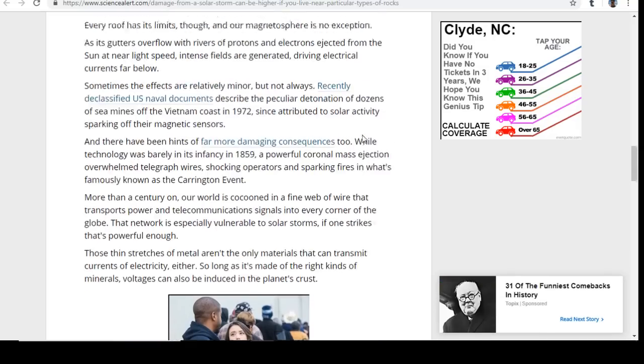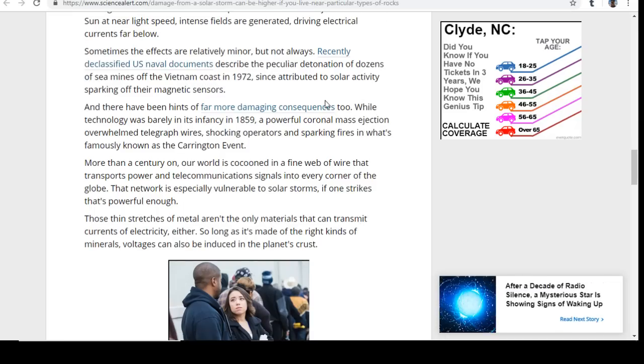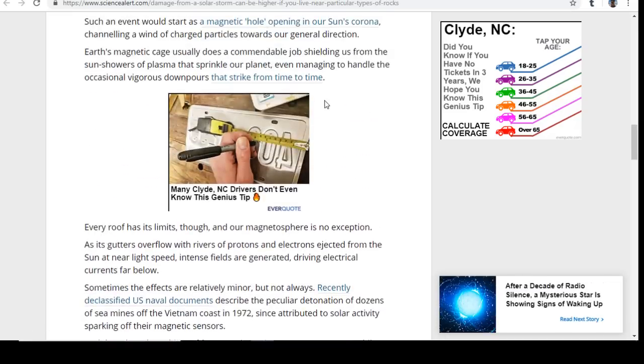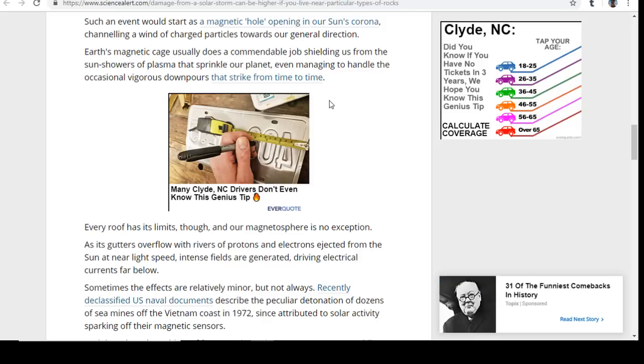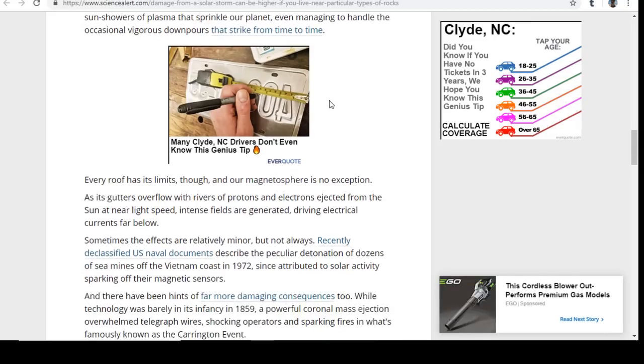We're talking about different layers of rock, big CMEs, and EMPs—there are many things we're facing. Earth's magnetic cage usually does a commendable job of shielding us from the sun's showers of plasma. Every roof has its limits though, and our magnetosphere is no exception. We're in a pole reversal, a magnetic pole reversal, so it's declining at the fastest rate in our times and many generations. It's way overdue for a full reversal.